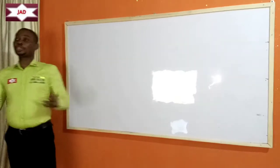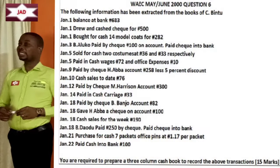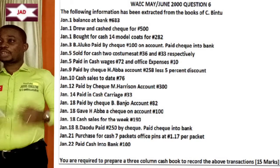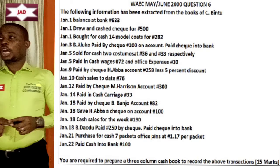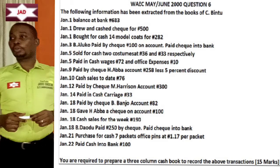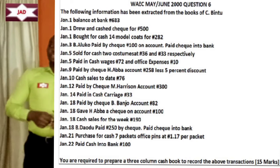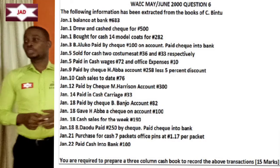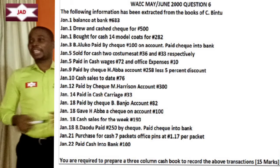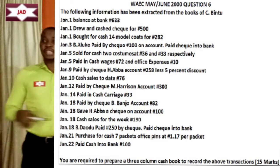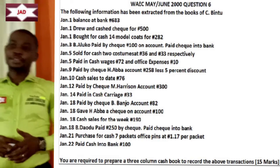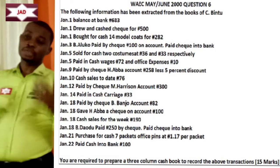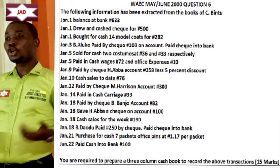We have the WAEC May/June 2000 question 6. It says: the following information has been extracted from the books of CB. January 1st, balance at bank, 683 Naira. January 1st, drew cash by check for 500 Naira. January 1st, bought for cash 14 model quotes for 282 Naira. January 3rd, B and report paid by check 100 Naira on account, paid check into bank. January 5th, sold for cash to customers at 36 Naira and 33 Naira respectively. January 5th, paid in cash wages 72 Naira and office expenses 10 Naira. January 9th, paid by check H-Abbas account 258 Naira less 5% discount. January 10th, cash sales to date 76 Naira. January 12th, paid by check M. Harrison account 300 Naira. January 14th, paid in cash carriage 33 Naira. We have transactions up to January 22nd. The question requires you to prepare a three-column cash book to record the above transactions.